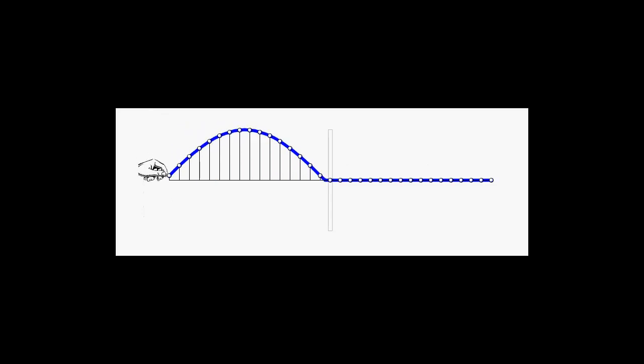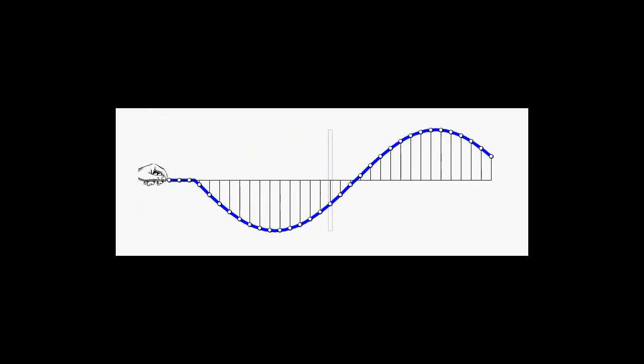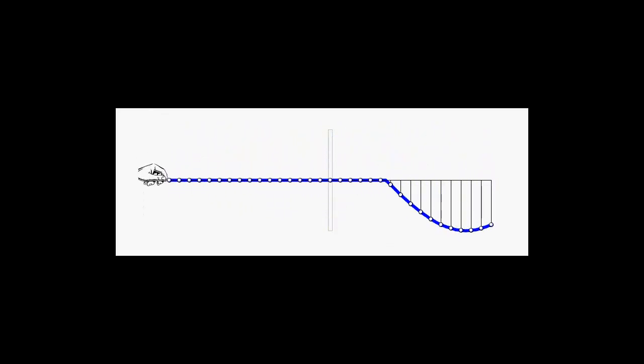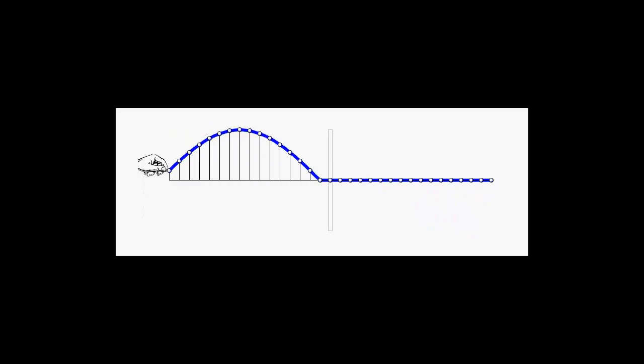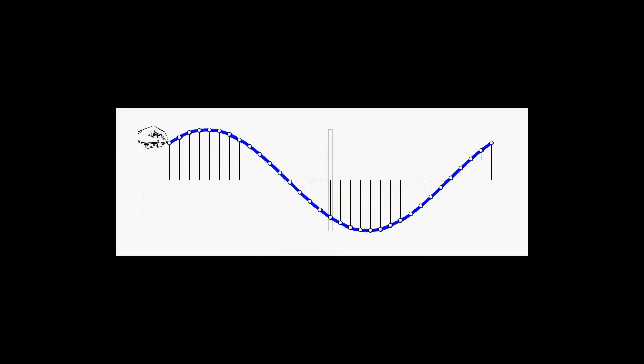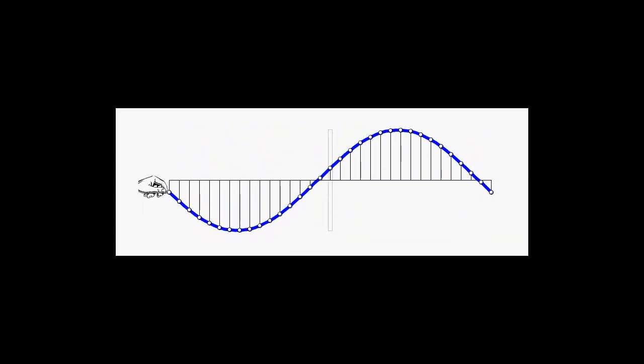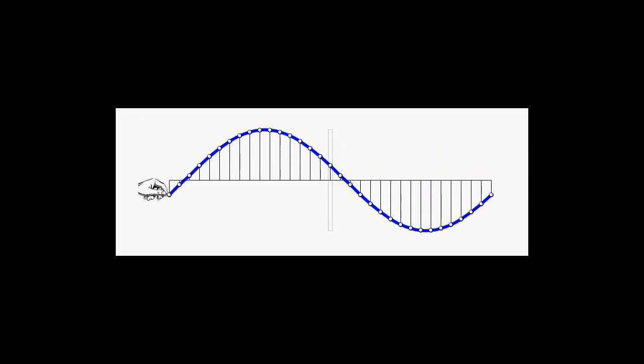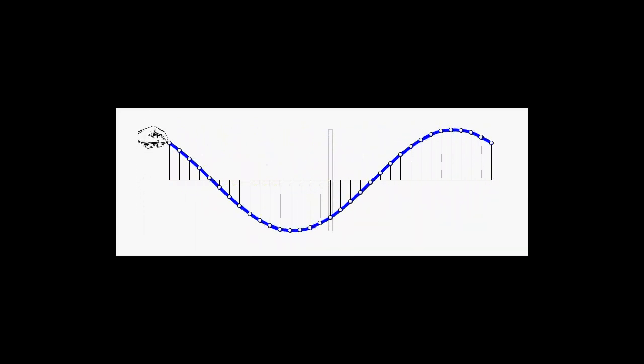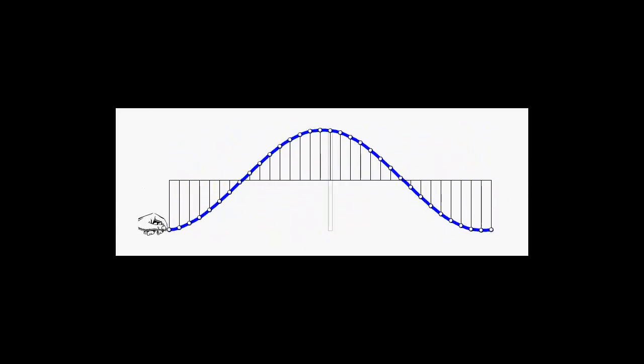If the left end of the rope completes one oscillation, one wave travels along the rope. If it is a continuous oscillation at the left end, wave after wave propagates along the rope. Oscillations are in the y direction and the wave is traveling in the x direction. This is a transverse wave.